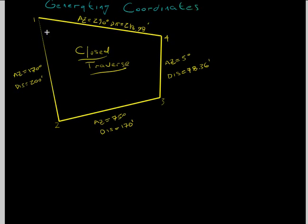So I used the same traverse as we had last time and it's a closed traverse. Same azimuth and I created distances: 200 feet, 170 feet, 78.36 and 218.98.